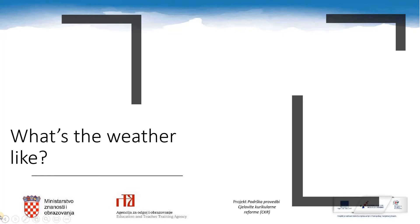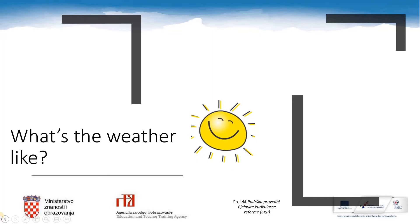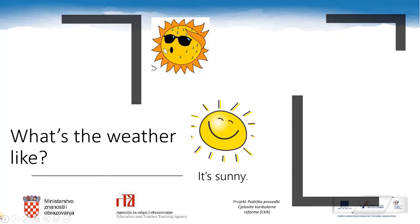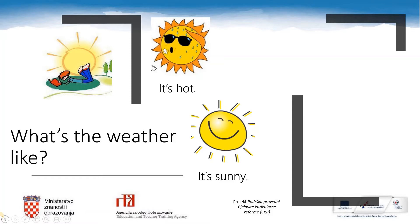What's the weather like in summer? I will show you some pictures. Your task is to say what the weather is like — say it out loud. Look at the first picture. What's the weather like? That's right, it's sunny. What's the weather like here? It's hot, of course. What about in this picture? It's warm. Weather in summer is usually hot, sunny or warm.